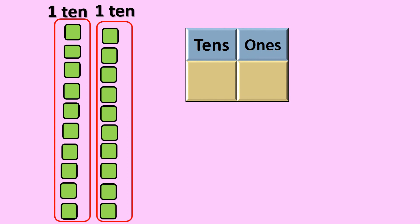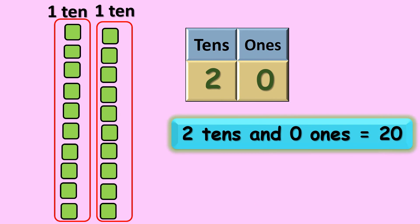So children, we have 10 ones, which gives you 1 ten. So how many tens do we have now? We have 2 tens. And do we have any ones? No. So we write 0 ones. 2 tens and 0 ones gives you 20.